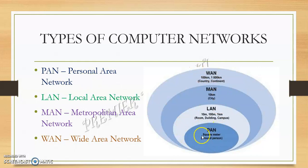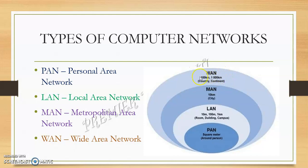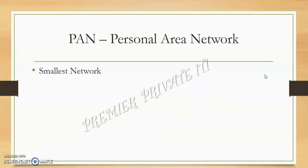PAN is a Personal Area Network used by an individual to connect their personal devices. LAN is a Local Area Network covering a range of around 1 to 5 km. MAN is a Metropolitan Area Network, which is city-sized. WAN is the biggest network, covering 100 km to thousands of kilometers.